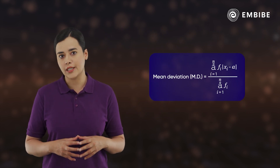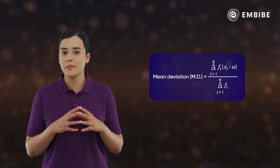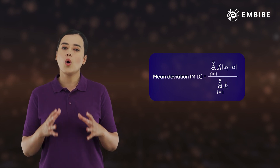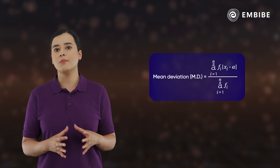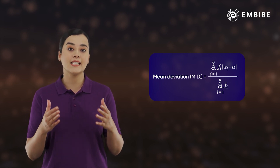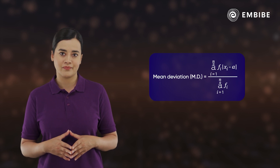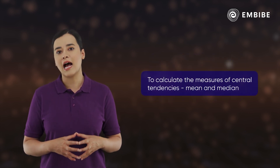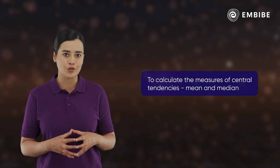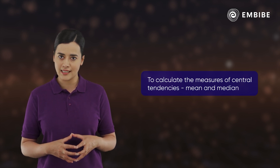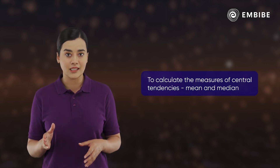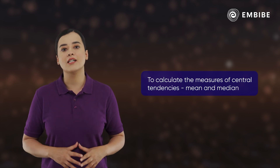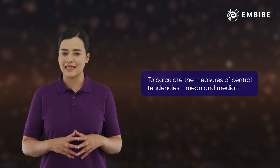Now that we've learned how to calculate the mean deviation of grouped data, we are all set to try them on a data set. Before that, let us quickly revise how to calculate the measures of central tendencies — mean and median — of grouped data, because that is our first step in the calculation.